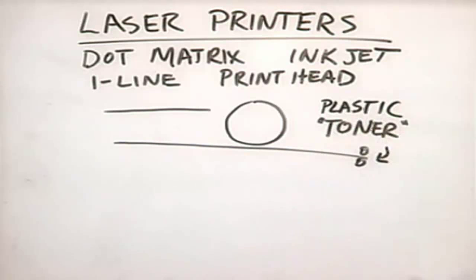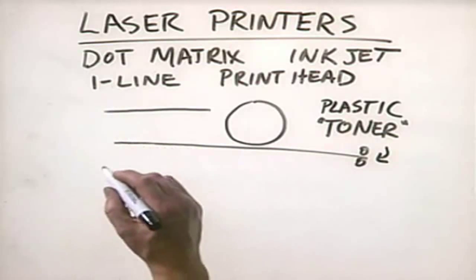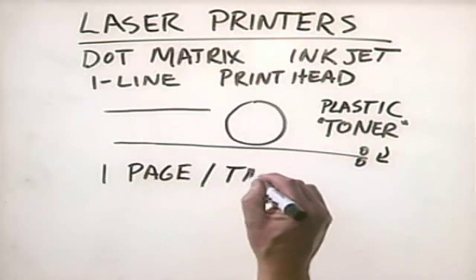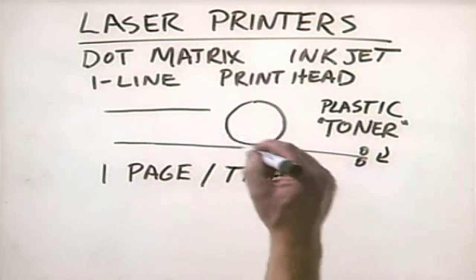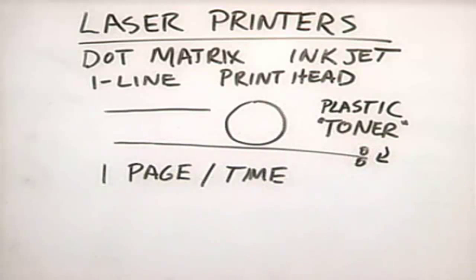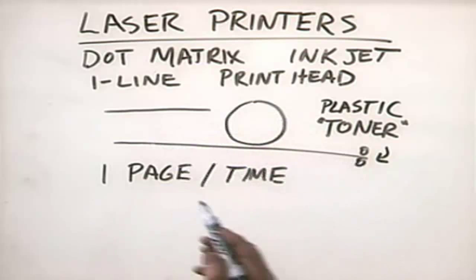Laser printers, instead of printing one line at a time, actually print one page of data at a time. One page of data is transferred onto this drum and one piece of paper at a time rolls through and has the image transferred onto it. This brings up a very important point: if you're just printing simple text, a simple text document, it doesn't take much memory in the laser printer to transfer that image.